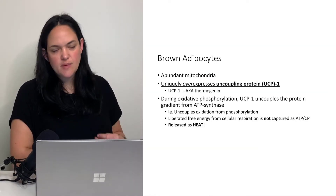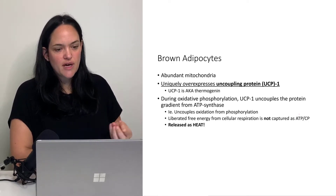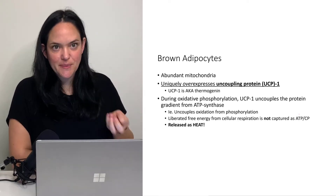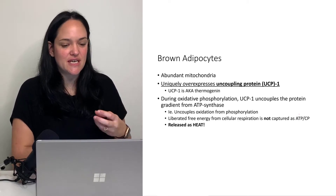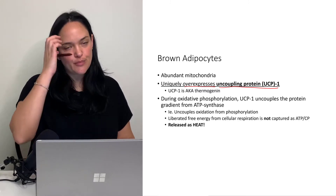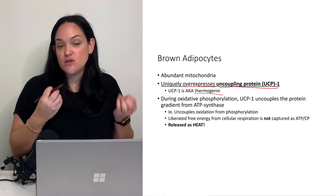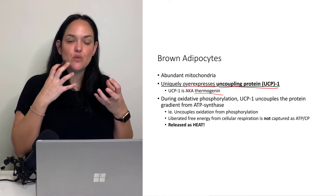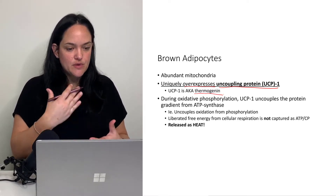Brown adipocytes have more lipid droplets, they're multilocular, they have more mitochondria, and they have a central nucleus. But what makes them the most interesting is that they overexpress something called uncoupling protein 1 — UCP1 — also known as thermogenin. This is responsible mainly for the thermogenic activity of brown adipocytes.